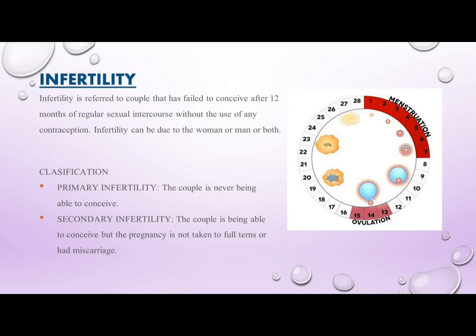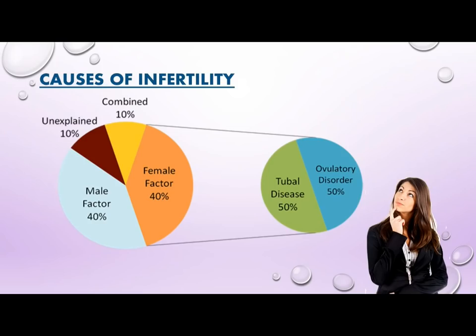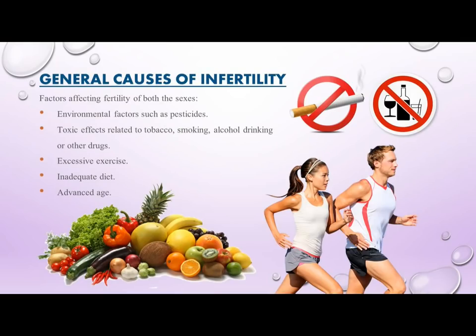Infertility is defined as a couple that has failed to conceive after 12 months of regular sexual intercourse without the use of any contraception. It can be due to the woman, the man, or both. Classification: primary infertility — the couple has never been able to conceive; secondary infertility — the couple has conceived before but the pregnancy was not carried to full term or resulted in miscarriage. Causes: male factor 40%, female factor 40%, combined causes 10%, unexplained 10%.